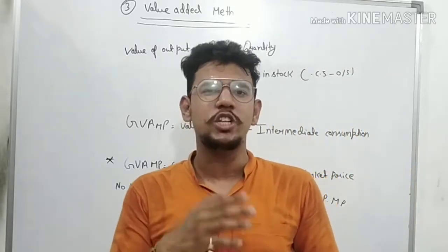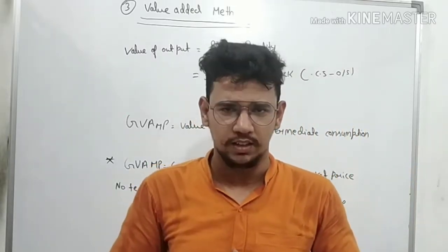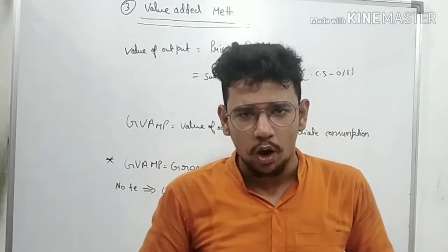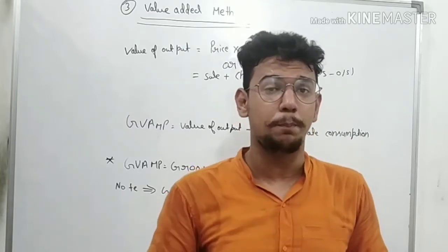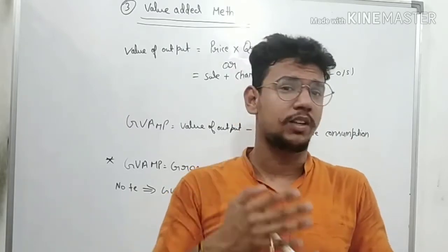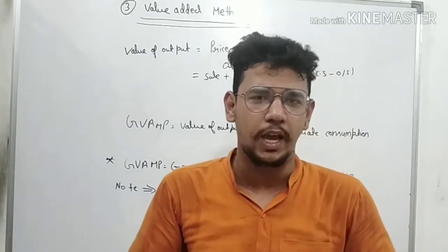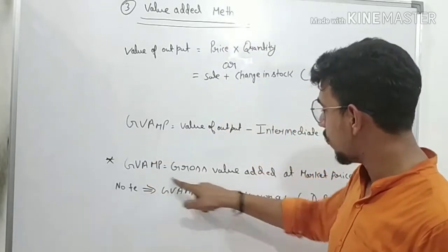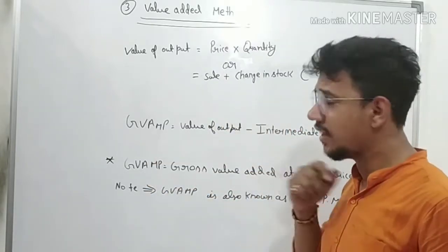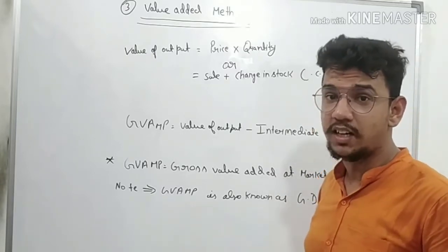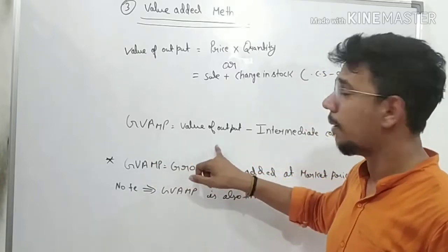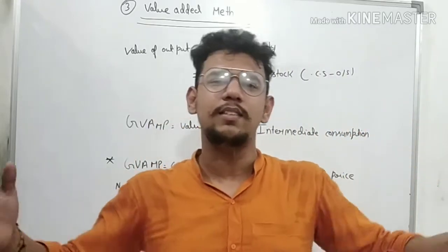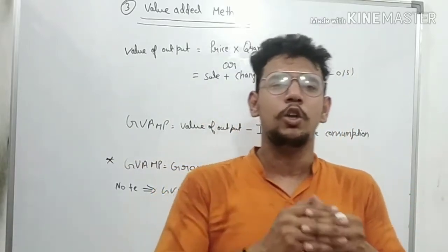You need to find out GVMP — Gross Value Added at Market Price. The formula is: GVMP = Value of Output minus Intermediate Consumption. A question may arise: what is intermediate consumption?